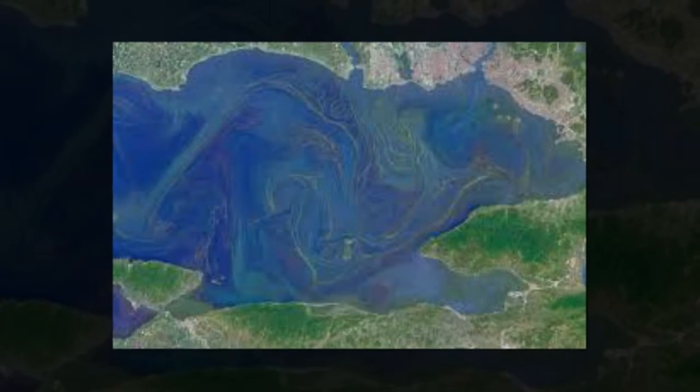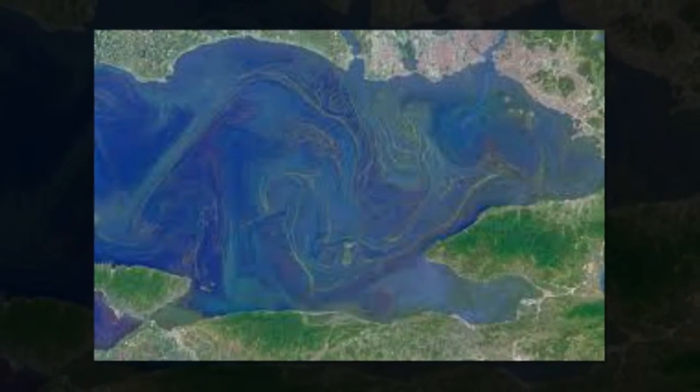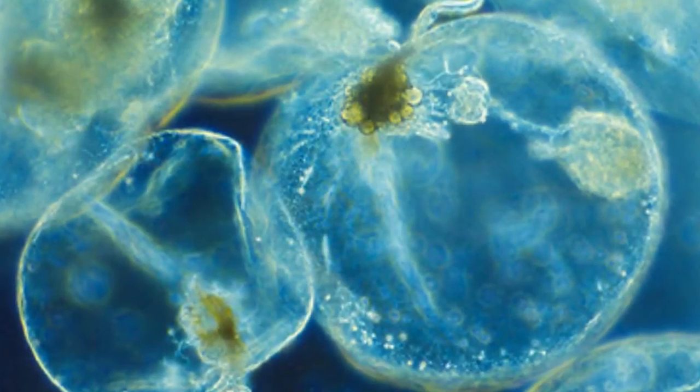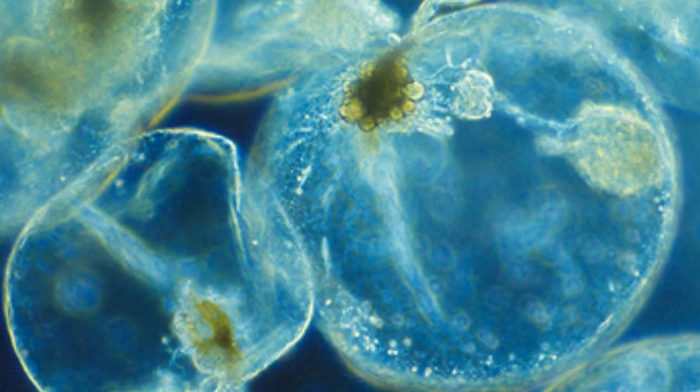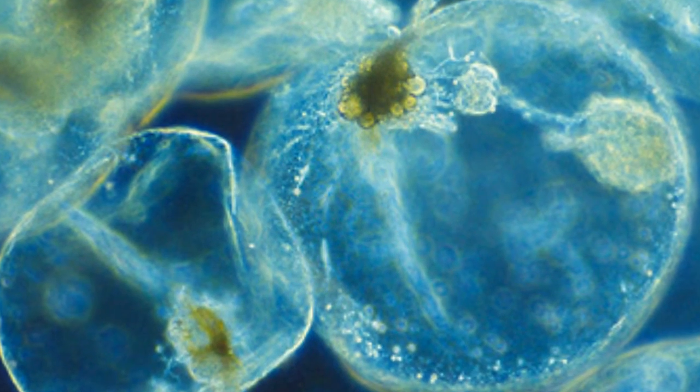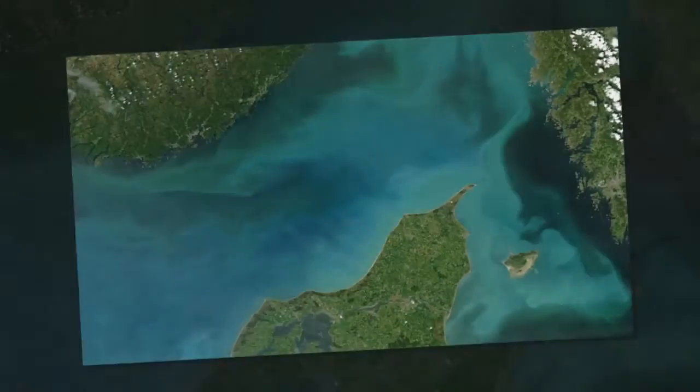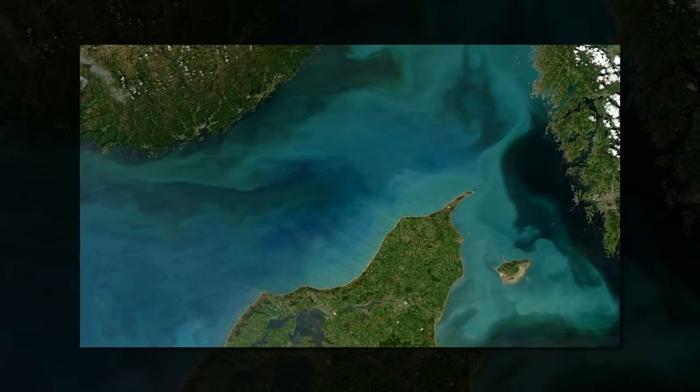The team's analysis of continuous plankton recorder survey data from the North Atlantic Ocean and North Sea since the mid-1960s suggests rising carbon dioxide in the ocean is causing the coccolithophore population spike, said Sarah Rivero Calle, a Johns Hopkins doctoral student and lead author of the study.